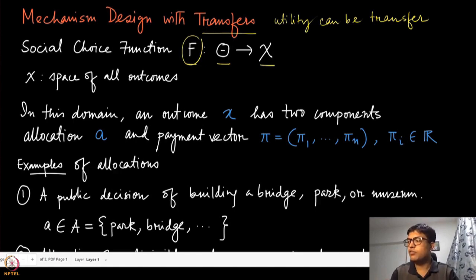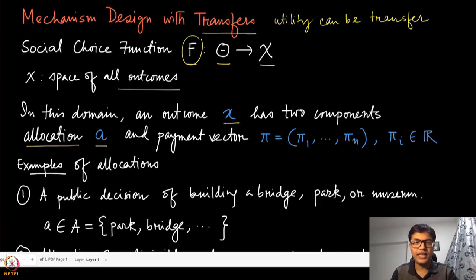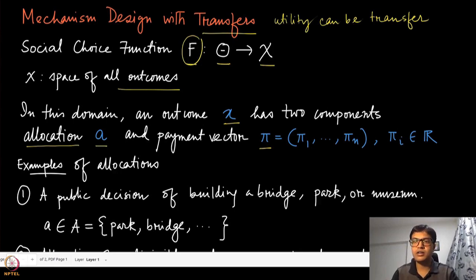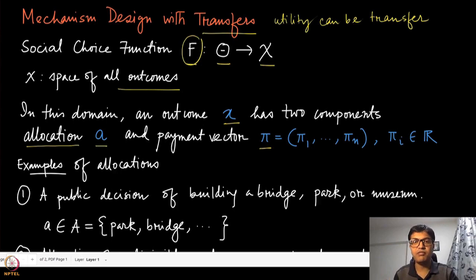What is this space of all outcomes in this case? The outcome x has two components. The first one is the allocation, denoted by lowercase a, and the second is the payment vector, denoted by pi, which gives a payment for each of the players. This payment is just a real number — each agent is given a certain real number to pay, and that is exactly what these transfers are. This is the meaning of money in this context.